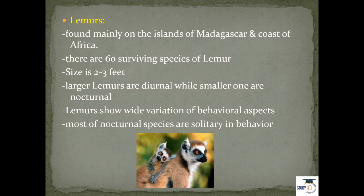Lemurs show wide variation in behavioral aspects, which is how they are specified as lemurs. Most nocturnal species are solitary in behavior — they live alone, not in groups. Nocturnal species that could see at night were solitary, while the diurnal species lived in groups.